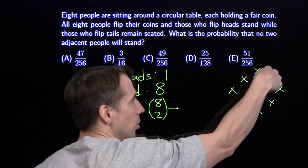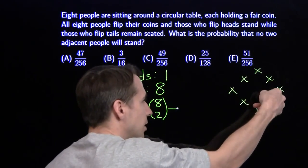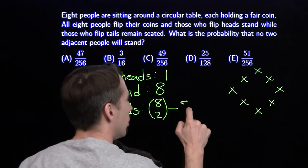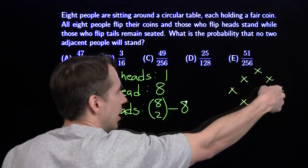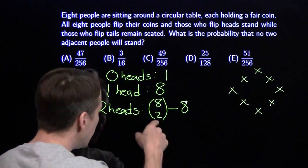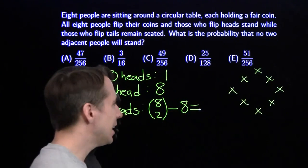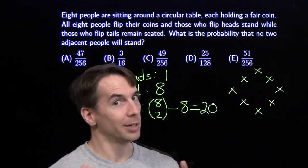It could be these two, or these two, or these two, or these two, all the way around there, eight pairs next to each other. And we can't have that, so we're going to subtract off the time the two heads are any of these two people that are next to each other. So eight choose two is four times seven, that's twenty-eight. Minus eight gives us twenty ways. We can have two people flip heads, but they're not next to each other.